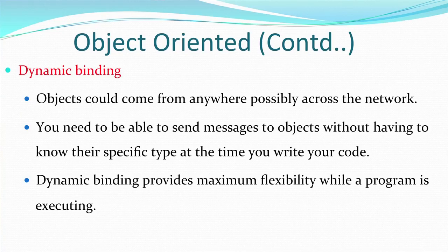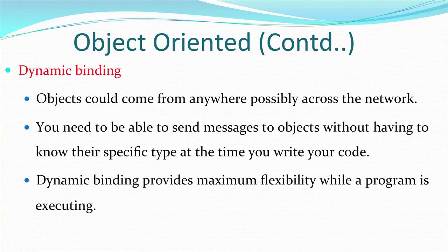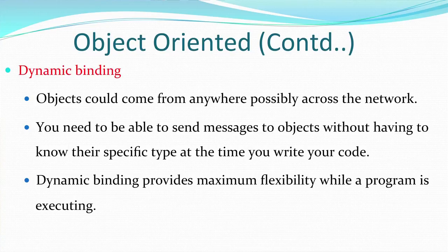An object-oriented language implements dynamic binding — 'dynamic' means at run time, not during compilation, but during execution. Objects could come from anywhere, possibly across the network, and you need to send messages to objects without knowing their specific type when you write the code. During execution, the binding takes place and the decision of the task to be performed is taken. Java implements dynamic binding in a very efficient manner, providing maximum flexibility while a program is executing.